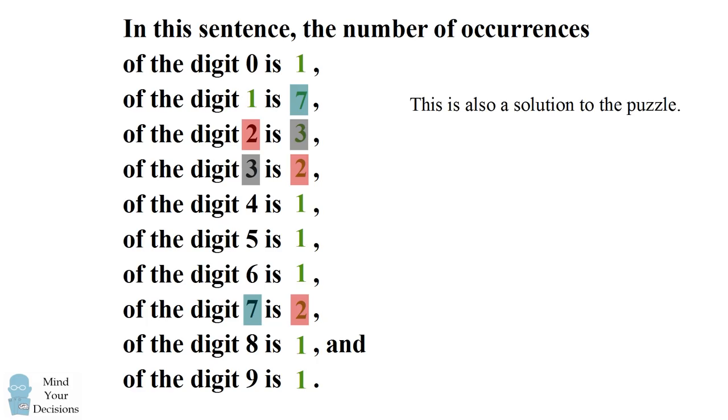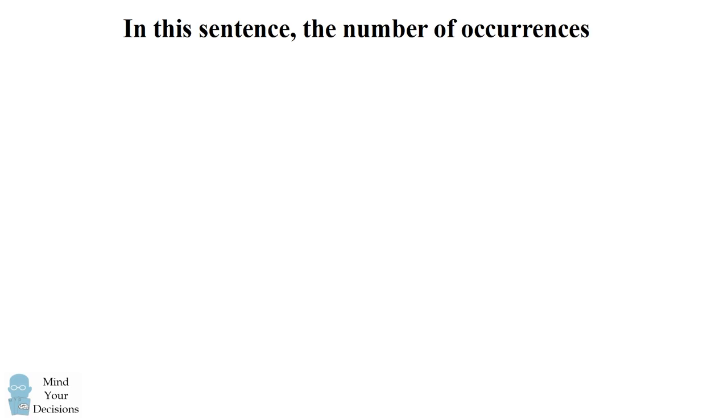Everything in this sentence is accurate. There are seven occurrences of the digit one, the digit two occurs three times, the digit three occurs two times, and the digit seven occurs two times, and everything else occurs one time.